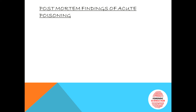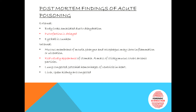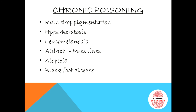The post-mortem findings of acute arsenic poisoning: externally, the body looks emaciated due to dehydration, putrefaction is delayed — an important point — and the eyeballs are sunken. Internally, there is inflammation of the mucous membrane of the mouth, pharynx, and esophagus. Another important finding is a red velvety appearance of the stomach. A mass of sticky mucus covers the arsenic particles. The lungs are congested, petechial hemorrhages are seen in the ventricles of the heart, and the liver, spleen, and kidneys are congested.